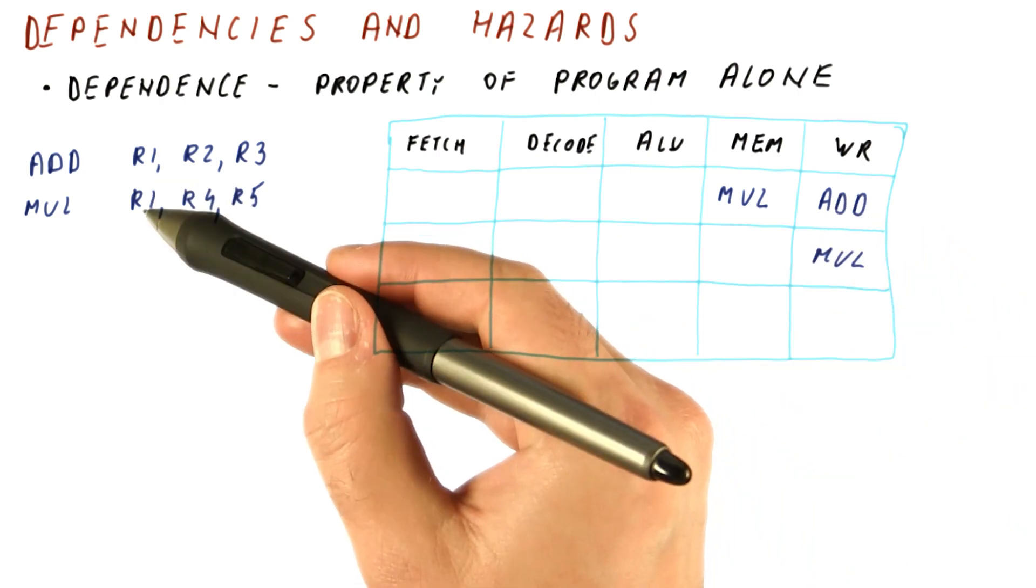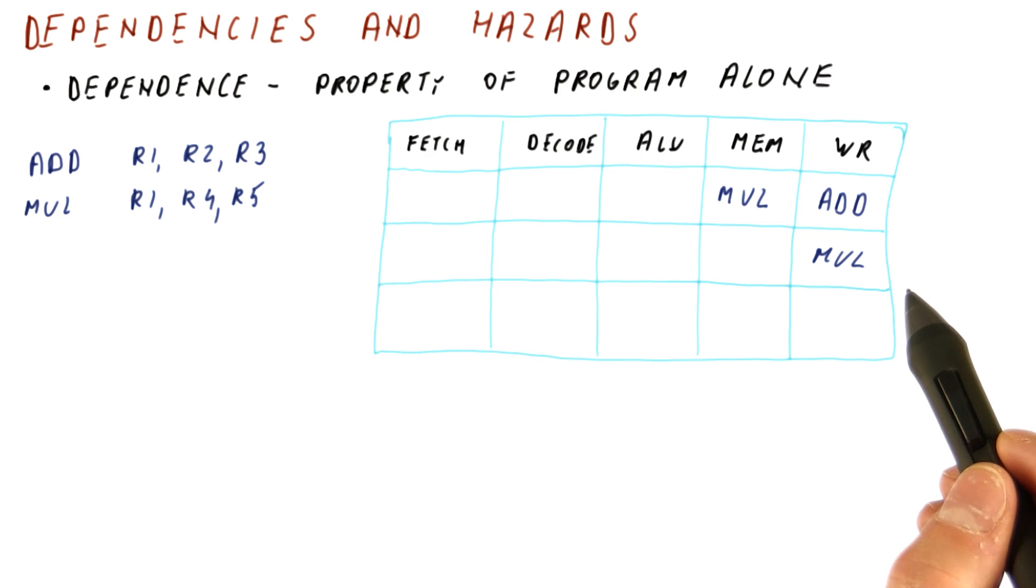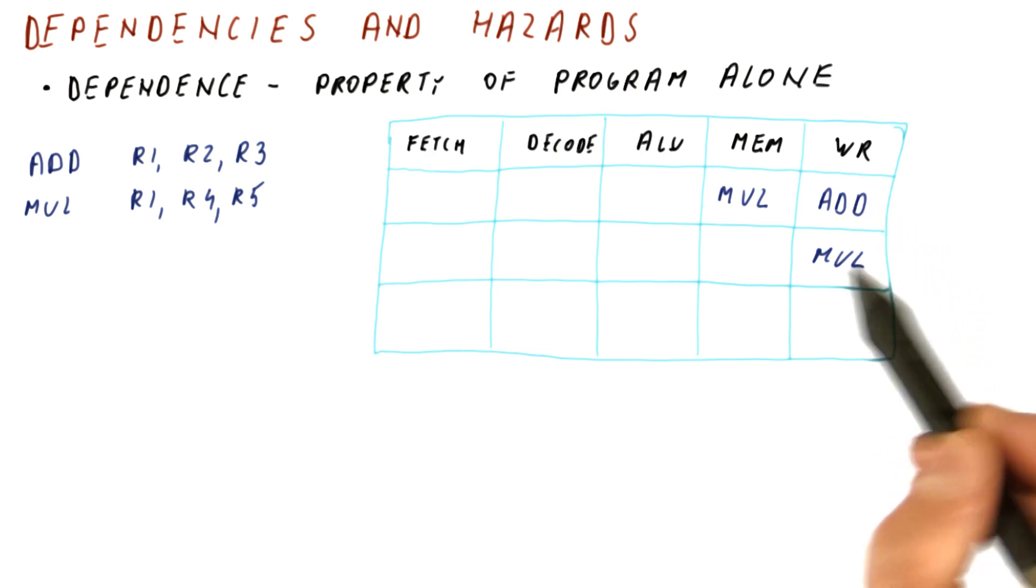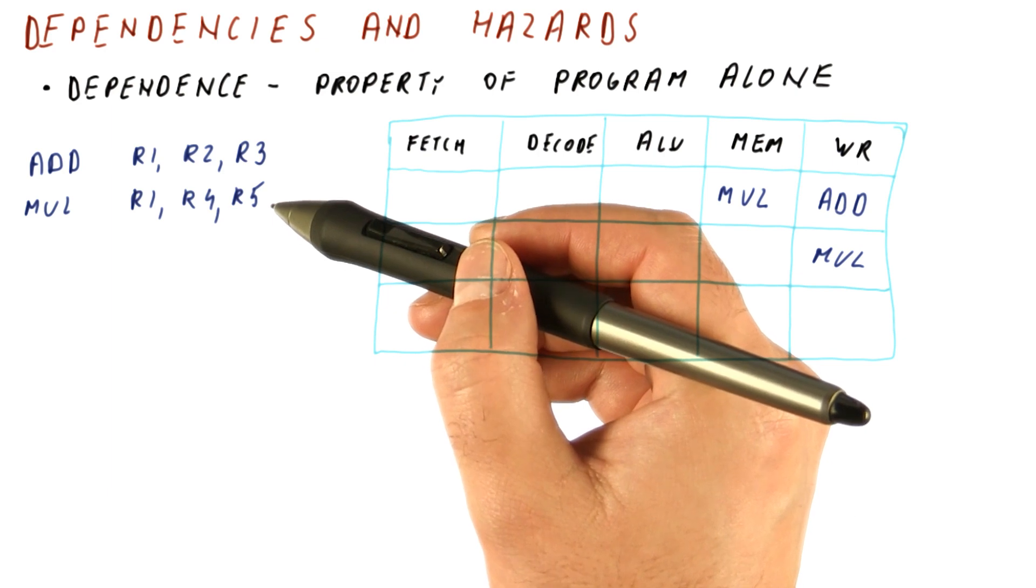This dependence will be naturally satisfied in this pipeline because the writes by different instructions are always occurring in program order in this pipeline.